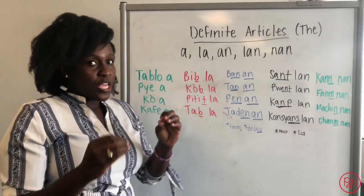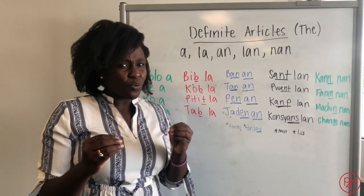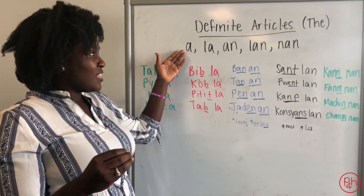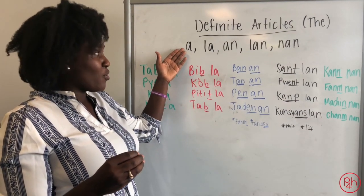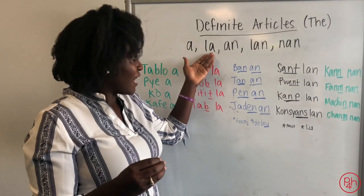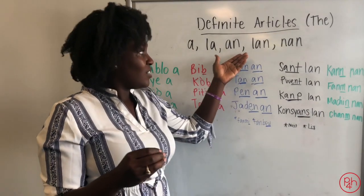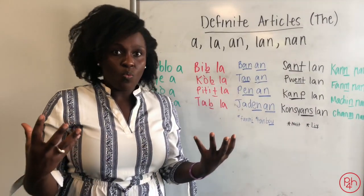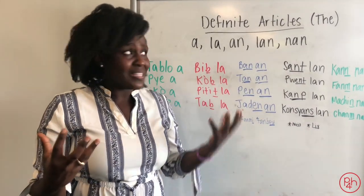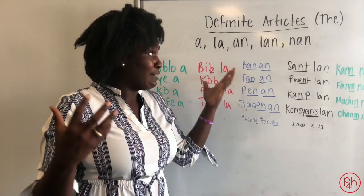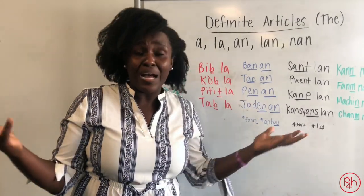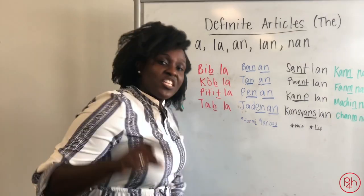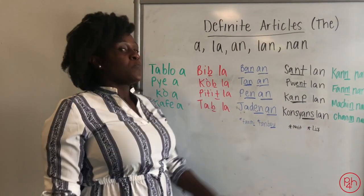If you're a little bit familiar with Haitian Creole, you will see that we have these words: A, la, un, and na. You might be wondering: when do I use A? When do I use la, un, or na? How do I use the definite article? This video is for you.